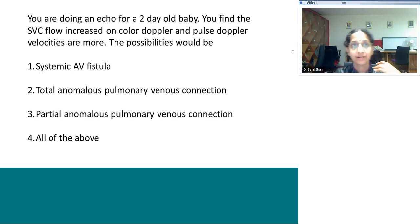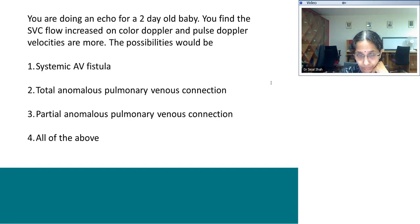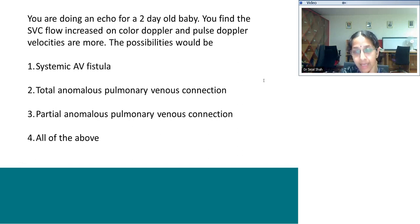Question 2: You are doing an echo for a two-day-old baby and find SVC flow increased on color and pulse Doppler velocities. The answer is option 4 — possibilities include systemic AV fistula, TAPVC (total anomalous pulmonary venous connection), and PAPVC (partial anomalous pulmonary venous connection). Routinely performing SVC Dopplers is important, especially in children without a clear diagnosis or with pulmonary arterial hypertension.